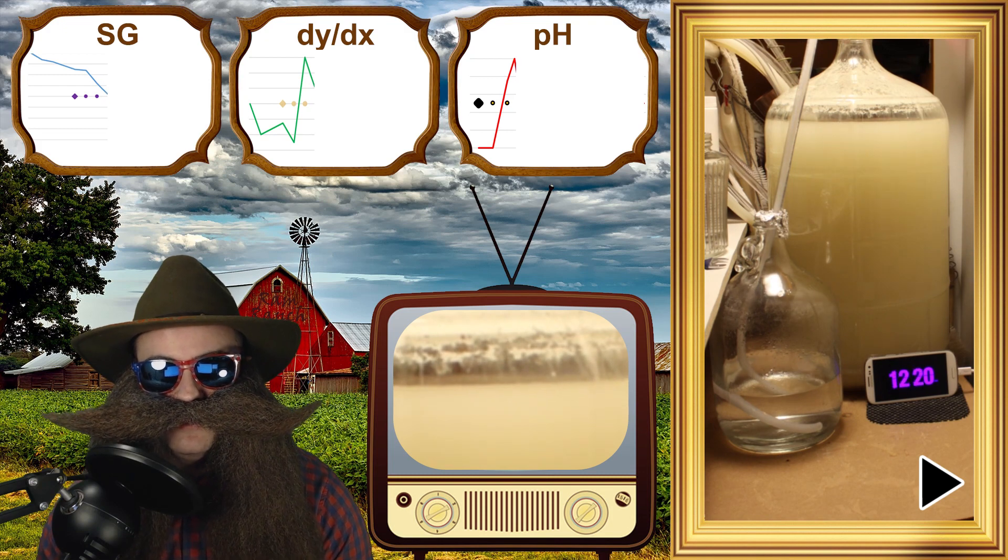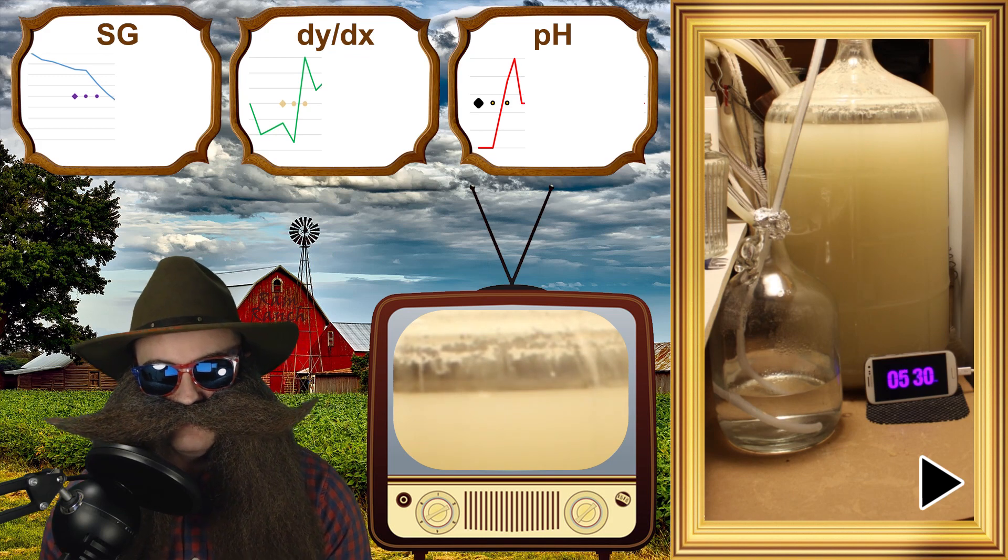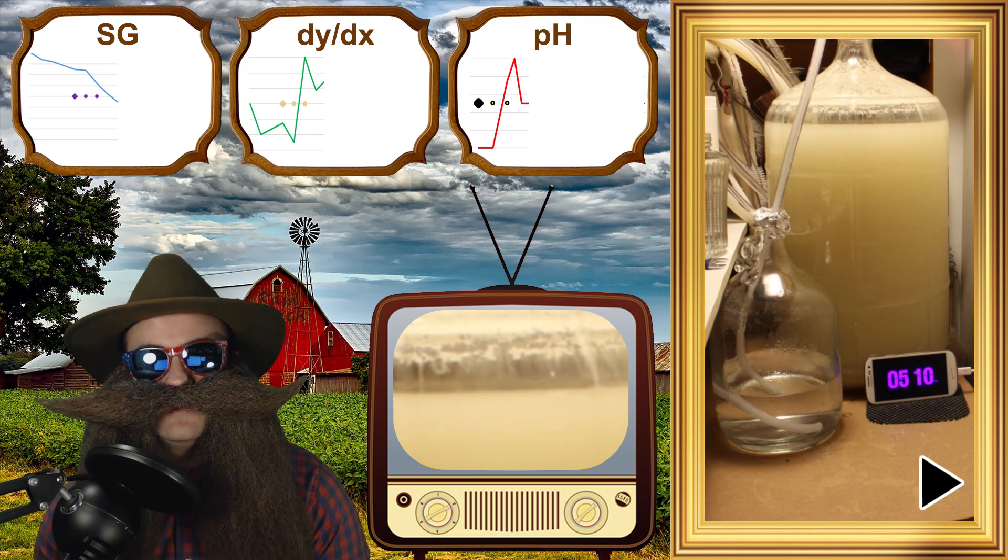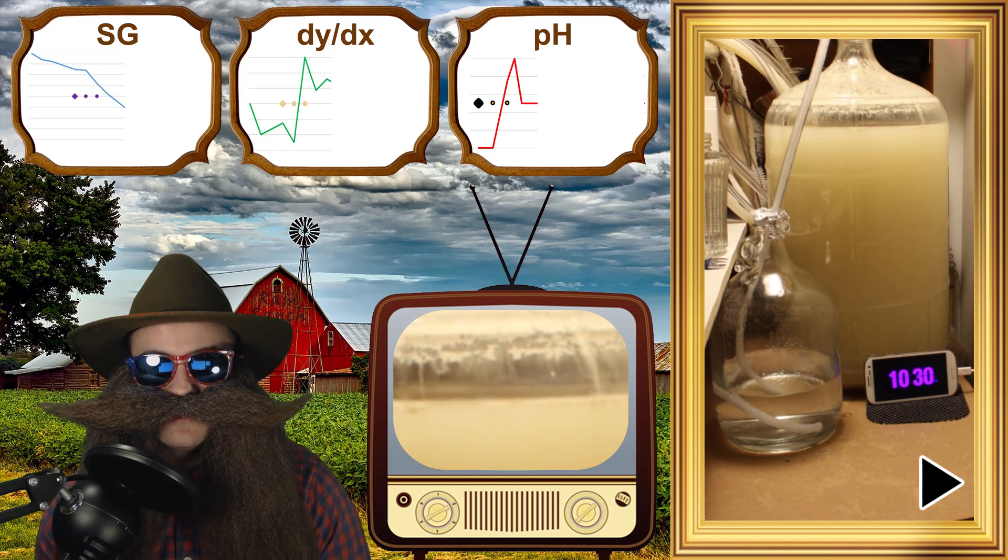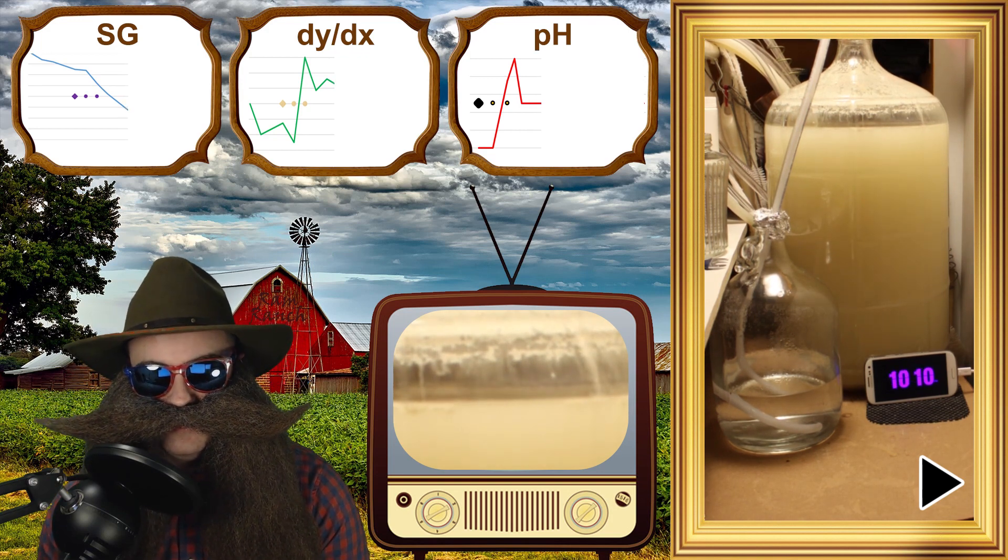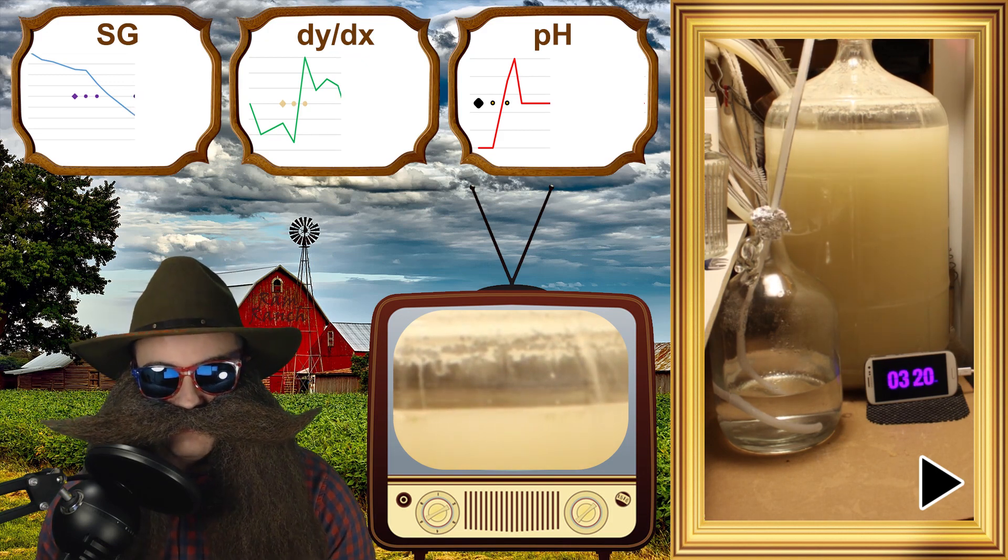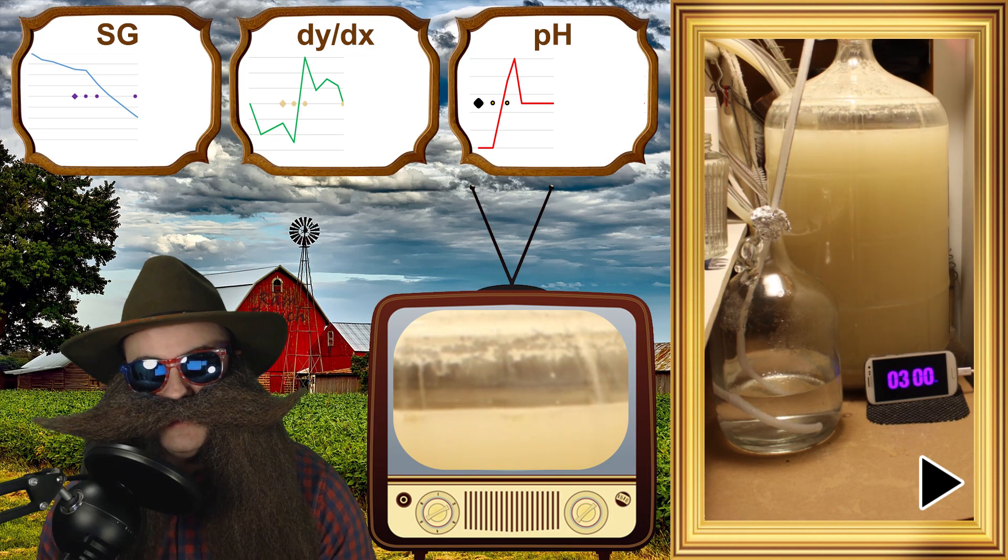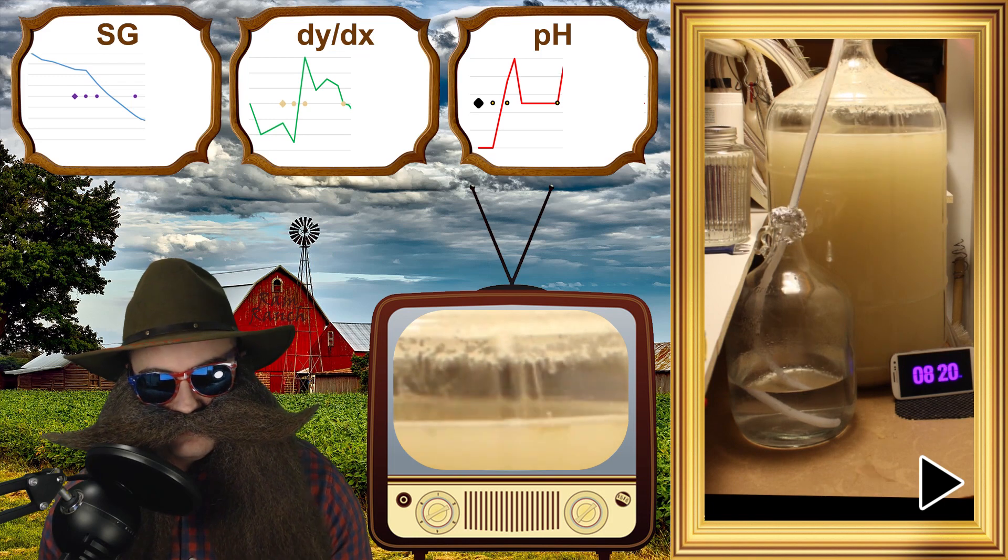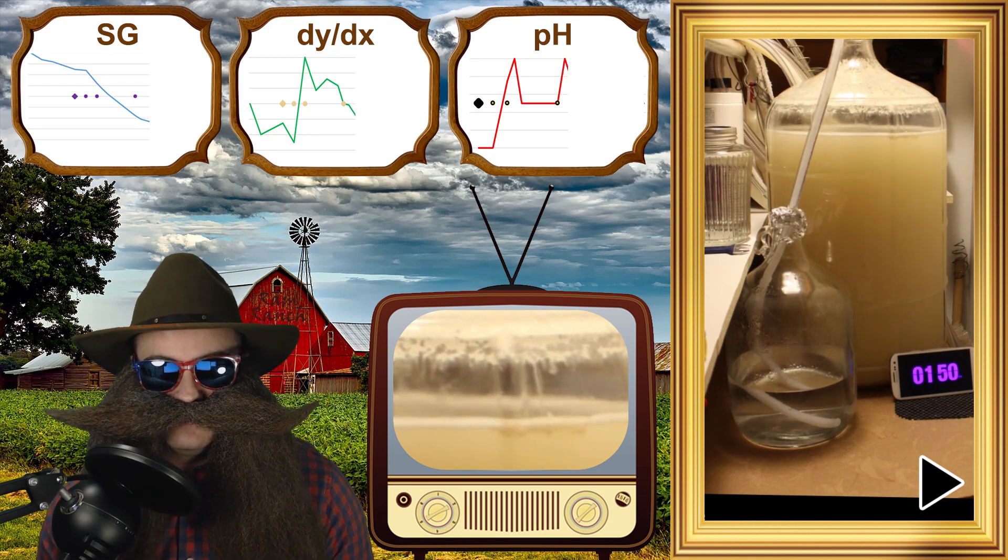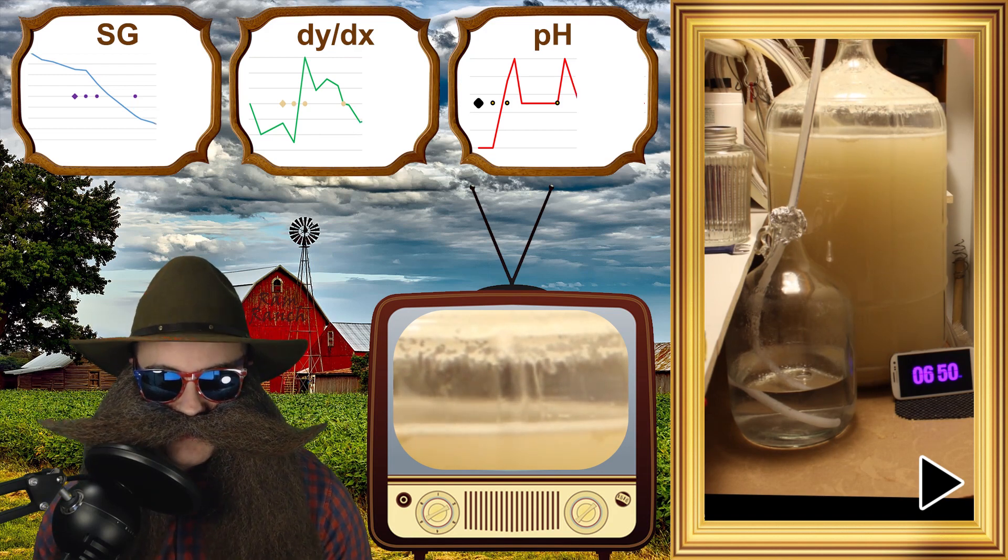Pay attention to the bubbling airlock. Although there isn't massive amounts of surface activity in the fermenter, like we saw during the yeast addition and nutrient addition, we do see significant airlock activity and a different kind of surface activity. In the graphs, we see pH spike up, specific gravity sharply turns downwards, and the rate of sugar consumption shoots up. These are all great signs that fermentation's happening.